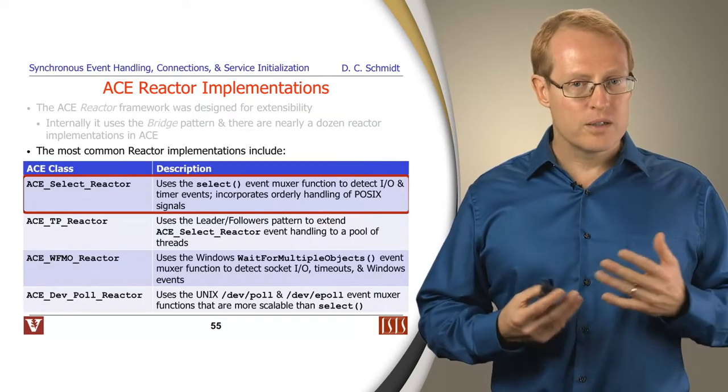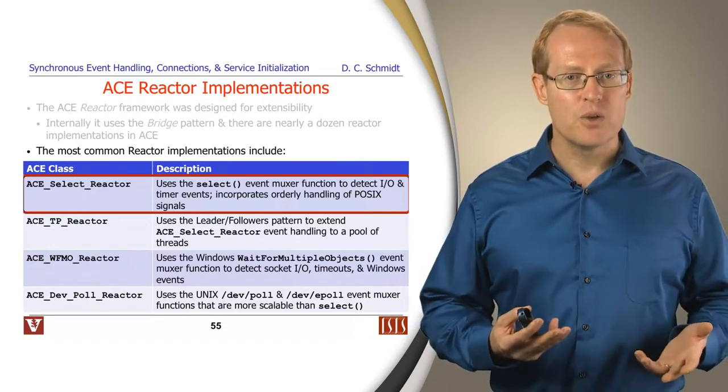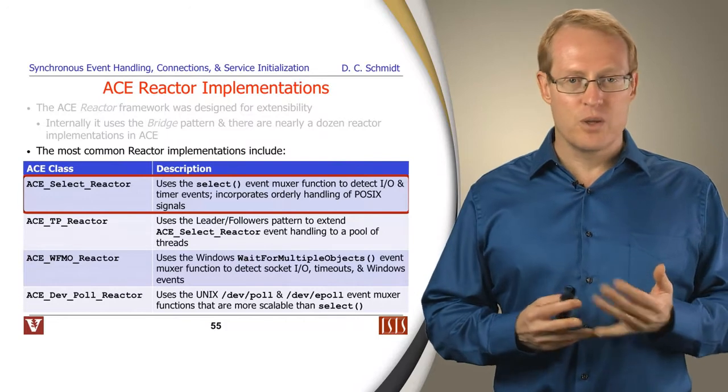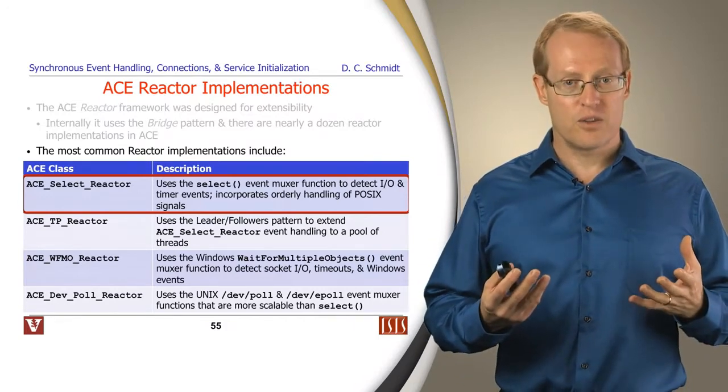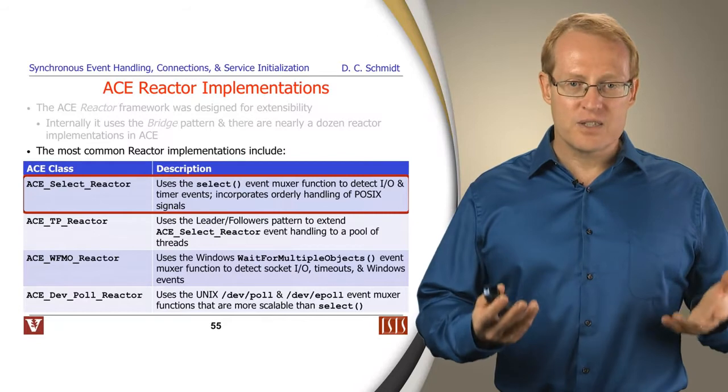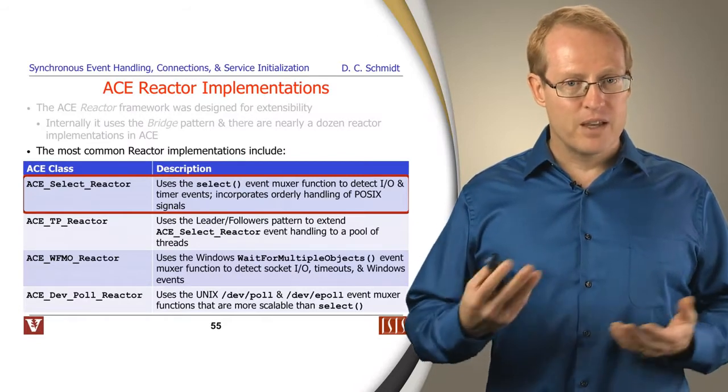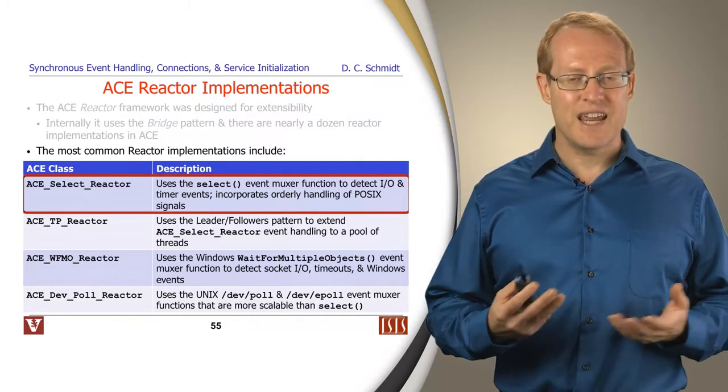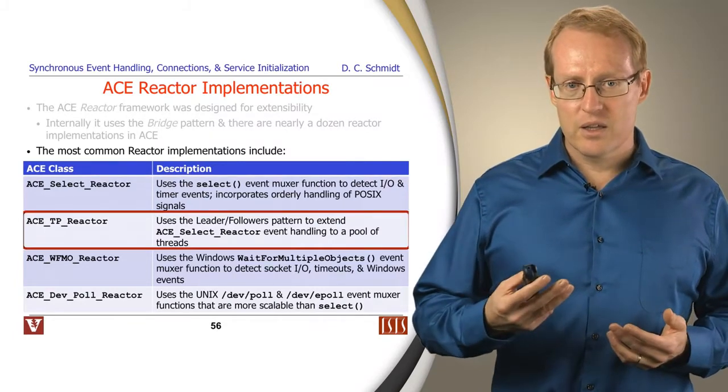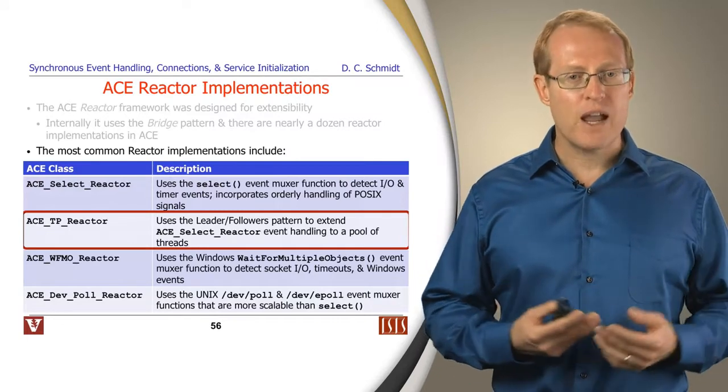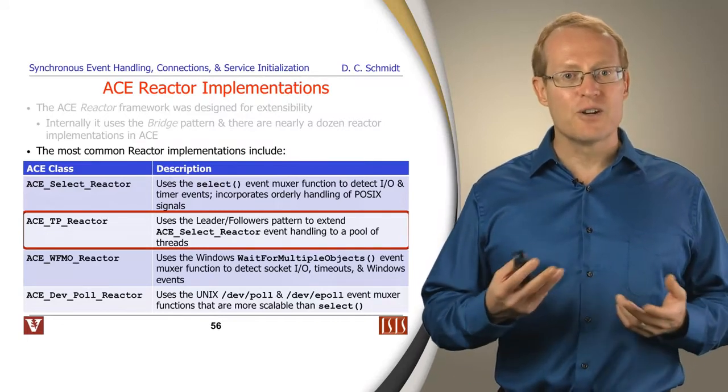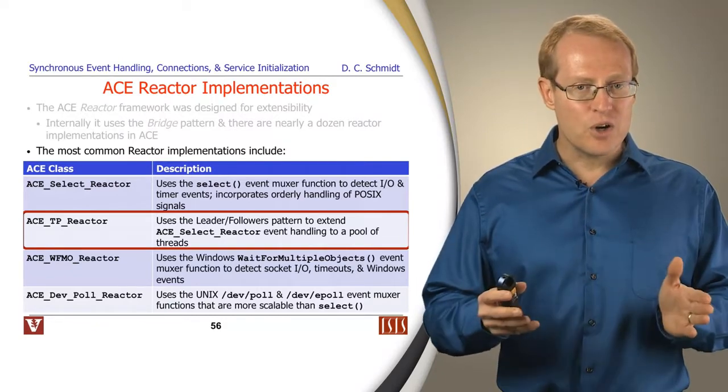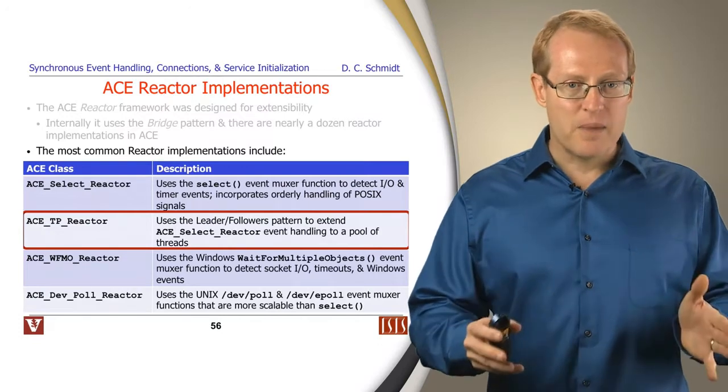Some of the core types of reactor implementations that are most commonly used are the following. The ACE select reactor, which uses select, and it allows one thread to take its time to dispatch event handlers that come back from events that select will dictate and indicate have arrived. It's got something called the ACE thread pool reactor or TP reactor, and that implements something called the leader followers pattern, which we'll talk about later, and that actually allows a pool of threads to take turns accessing the underlying select mechanism.